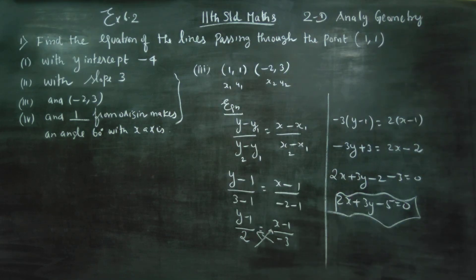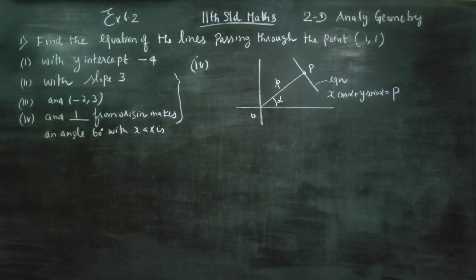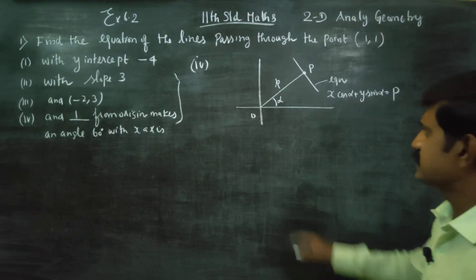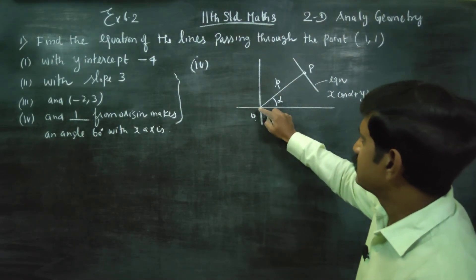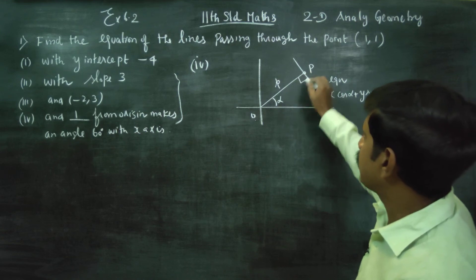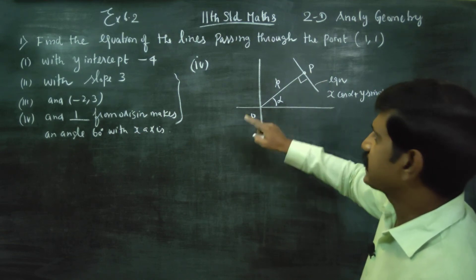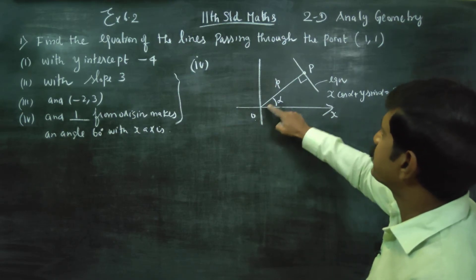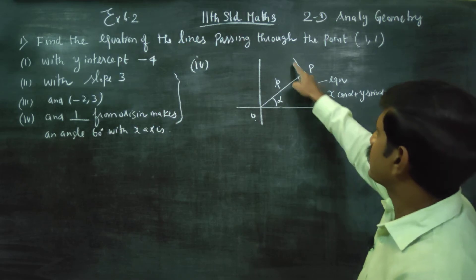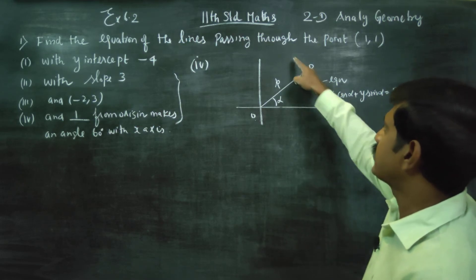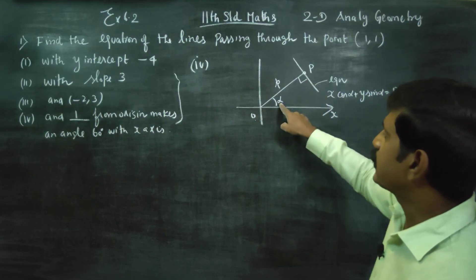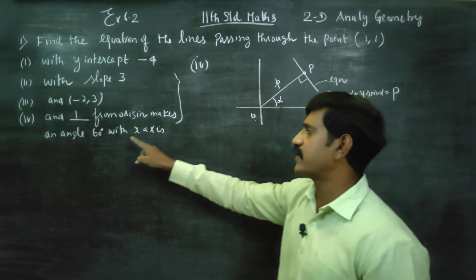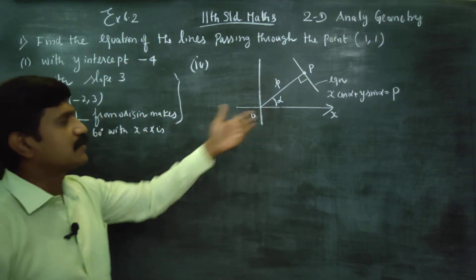That is the third result. Now the fourth subdivision: the perpendicular from the origin makes an angle of 60 degrees with the x-axis. This perpendicular line from the origin to the required line makes a 60-degree angle with the x-axis. This is an 11th standard concept.